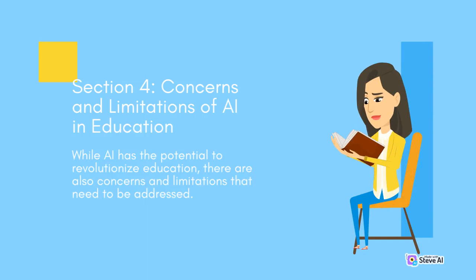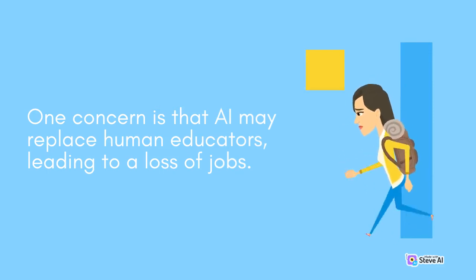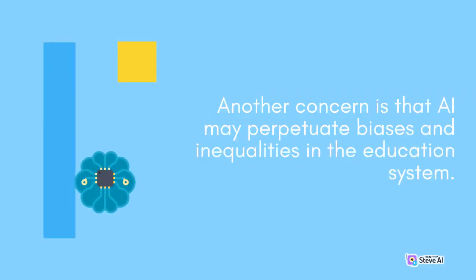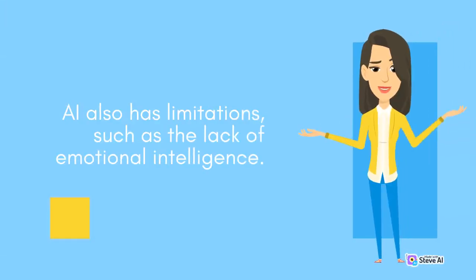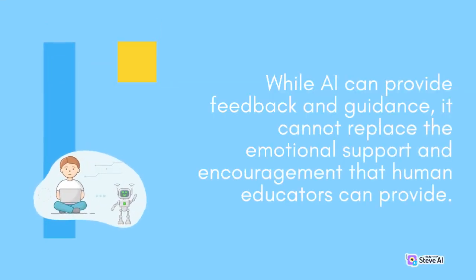Section 4: Concerns and Limitations of AI in Education. While AI has the potential to revolutionize education, there are also concerns and limitations that need to be addressed. One concern is that AI may replace human educators, leading to a loss of jobs. Another concern is that AI may perpetuate biases and inequalities in the education system. AI also has limitations, such as the lack of emotional intelligence. While AI can provide feedback and guidance, it cannot replace the emotional support and encouragement that human educators can provide.